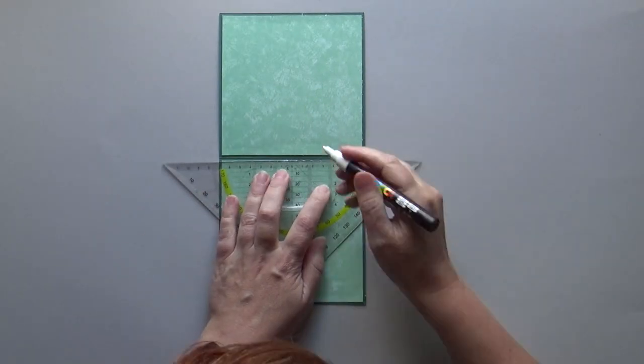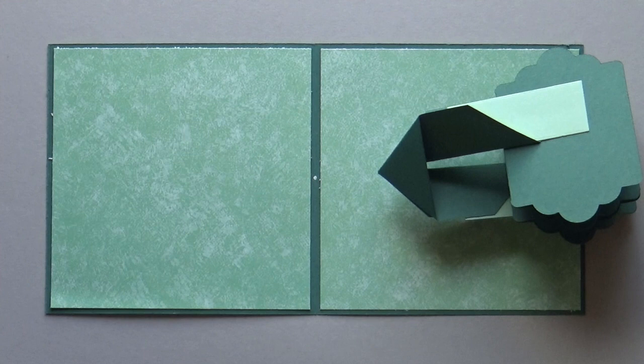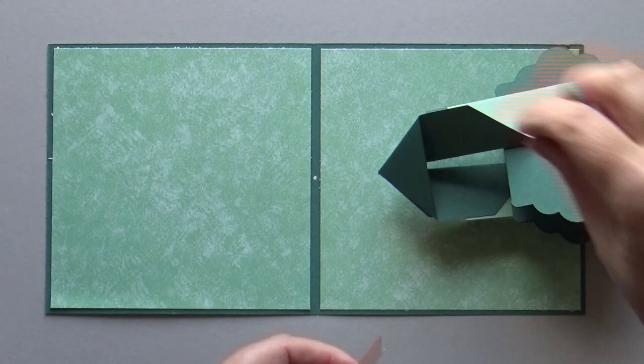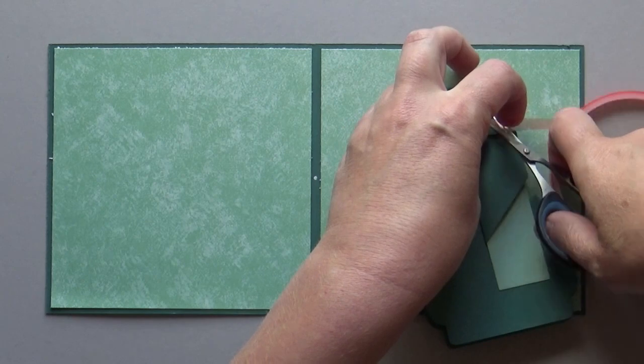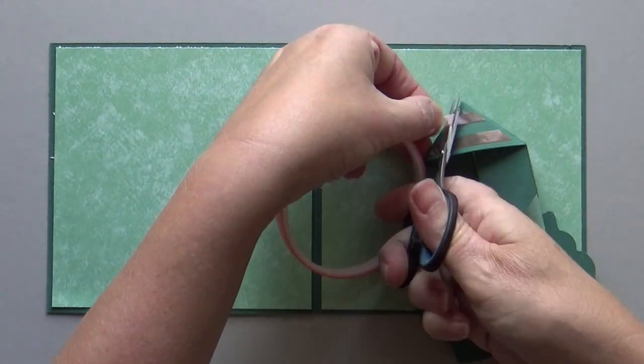Mark the center of your base card. You can glue the twist and pop part on the base card. Put red sticky tape on the triangles on each side.